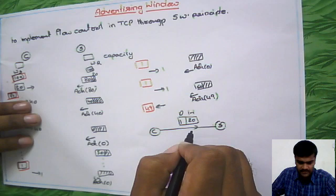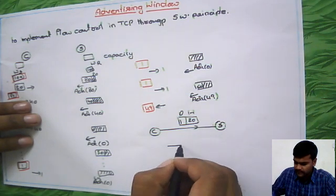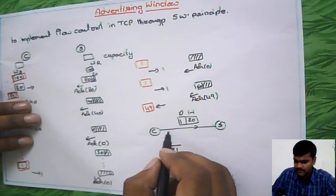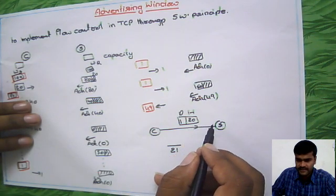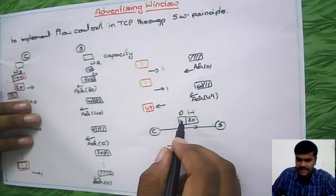So here what we have to observe is, out of total data you are transmitting, out of total data we are transmitting here, only one byte is useful.